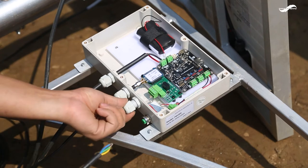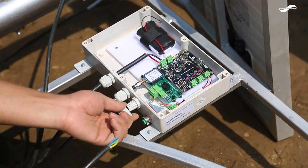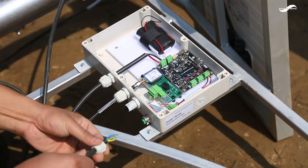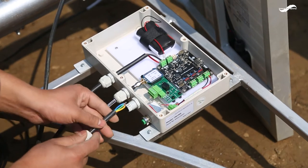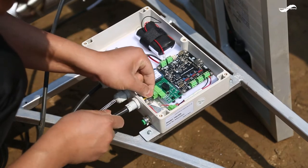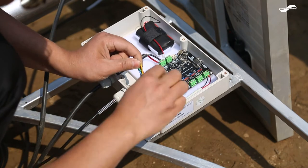Insert the sensor cable through the gland at the right and connect it to the sensor port on the PCB. Ensure the sequence of the cable as blue, red, green, and yellow from left to right.